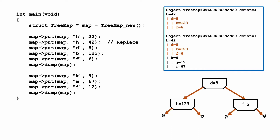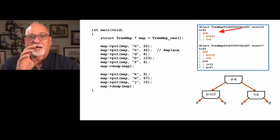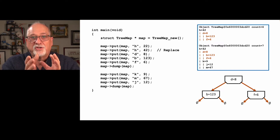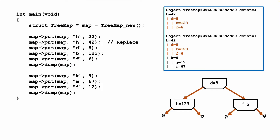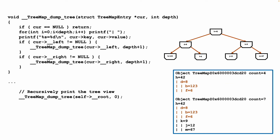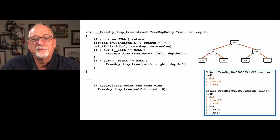We then put in k, m, and j and dump again. The map output shows h equals 42 at the top, and tries to give a sense of the tree structure — the number of vertical bars tells you how deep in the tree you are. You can see that the immediate child nodes of h in the second dump are d and k, and the child nodes of k are j and m. The idea of the dump code is to draw the tree for you.